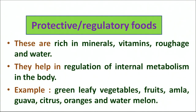Another category of food is protective or regulatory foods. This includes vitamins, minerals, water and roughage. The basic purpose of this category is to protect our body from different infections and to regulate internal metabolism in the body. Examples are fruits, green leafy vegetables, amla, watermelon, orange and citrus fruits.